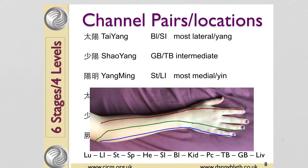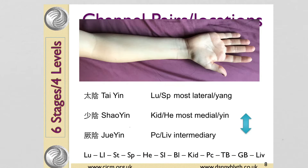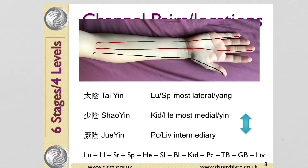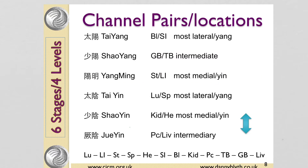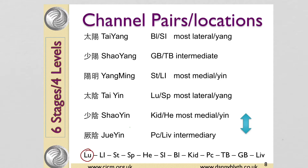You can see how these pairs of channels are quite similar. This is the same with Tai Yin — lung and spleen being the most lateral and the most yang of the yin organs. But the Shao Yin and the Jue Yin get a little more mixed up, where the heart and kidney seem deeper than the pericardium and liver. We can also think of the Chinese clock running from lung, large intestine, spleen, stomach, or the flow of Qi in the channels from the chest to the fingers, from the fingers to the head, the head down to the toes, and from the toes back to the chest.